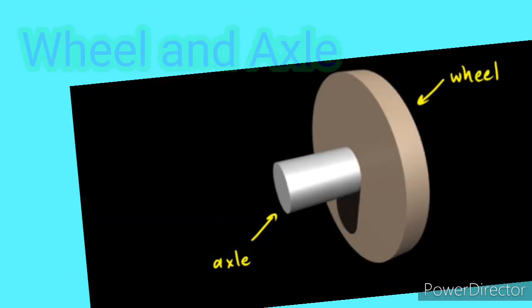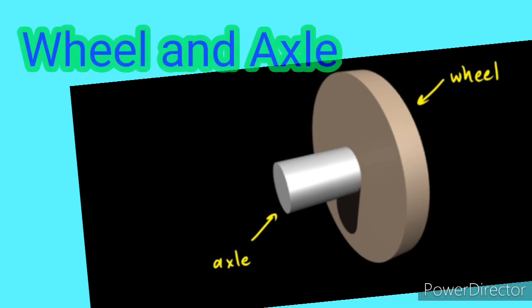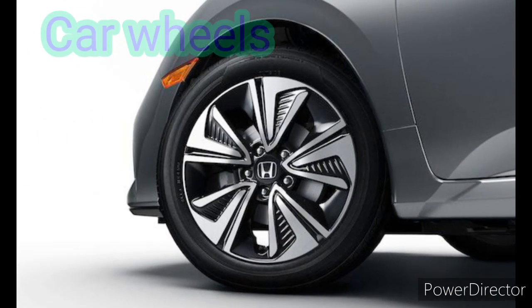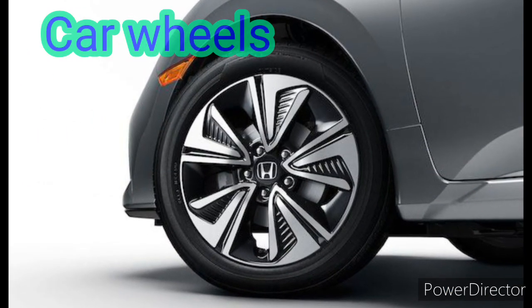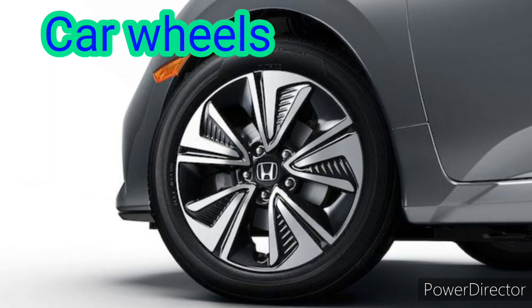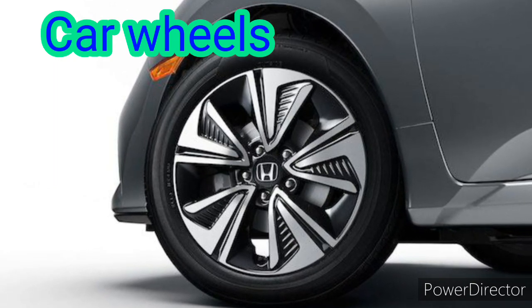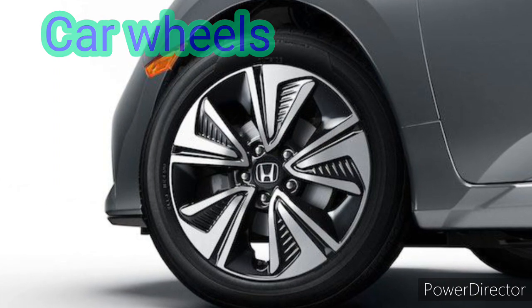The third type is wheel and axle. A wheel and axle has a larger wheel or wheels connected by a smaller cylinder called an axle and is fastened to the wheel so that they turn together. When the axle is turned, the wheel moves a greater distance than the axle, but less force is needed to move it. The axle moves a shorter distance but it takes greater force to move it. For example, cars are able to move because of their wheels and axles. The wheels and axles help reduce friction and allow a heavy object like a car to move around easily.